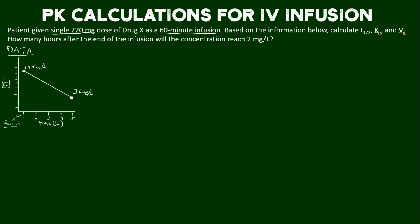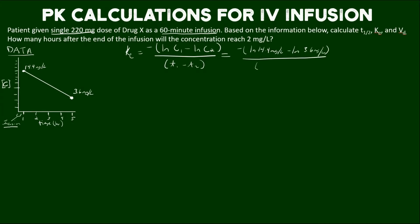The first thing we can calculate is the elimination rate. That is calculated by this equation: negative on top of the natural log of concentration 1 over time 1 in the denominator, minus the natural log of concentration 2 over time 2. Plugging in values: natural log of 14.4 mg/L minus natural log of 3.6 mg/L, over 1 hour minus 5 hours — giving us 0.347 hours⁻¹.